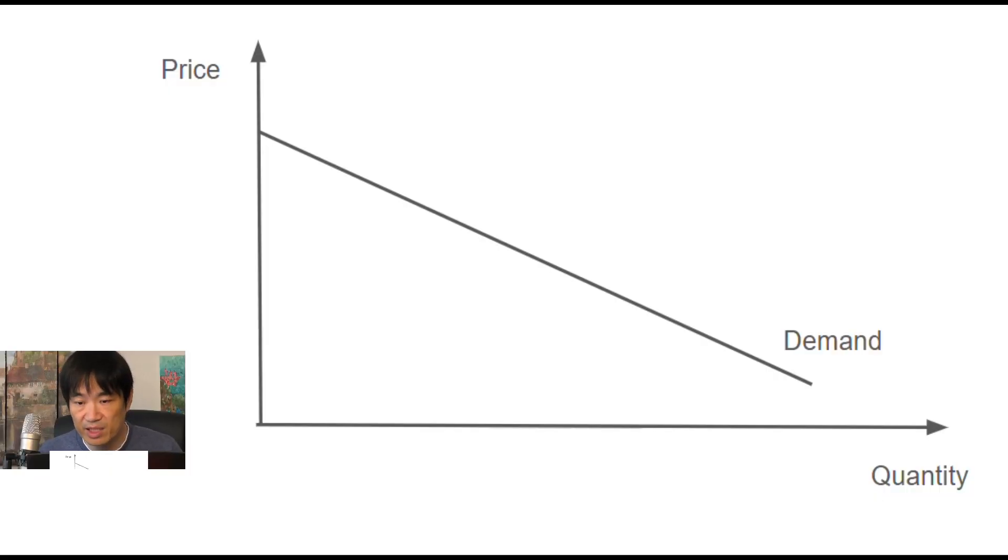First, there's this thing called the demand curve. It measures how many of a certain product demanded by the market under a certain price. It can take any shape. But for simplicity purposes, normally we just draw a straight line. And the vertical axis is the price of that product. Well, economists always put price on the vertical axis, but I don't think there's a particular reason. It's just the convention and the horizontal axis is the quantity of that product. So apparently the curve is going down, which means the higher the price, the less likely people will want to buy it.